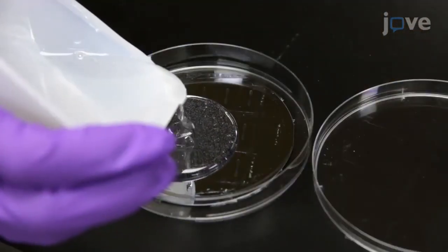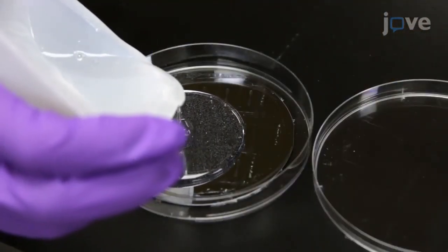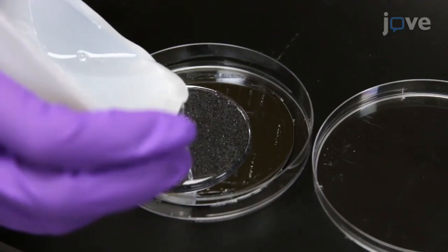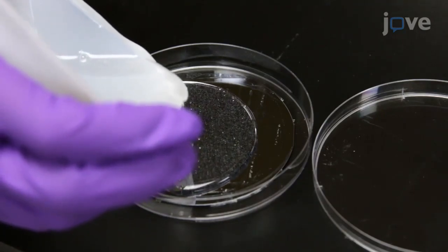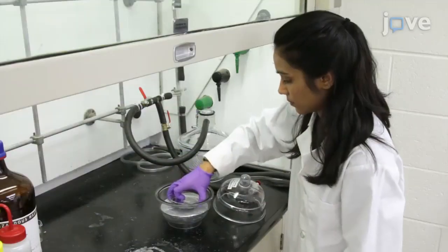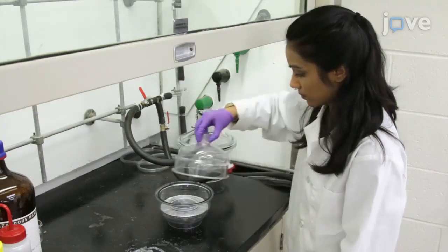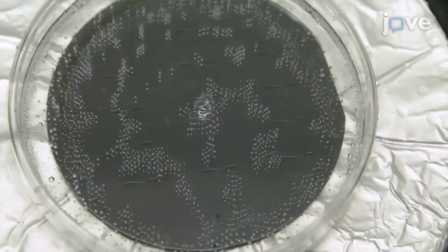Place the master silicon wafer in a plastic Petri dish and pour the PDMS solution over the wafer to create a 5mm layer. Cover the dish and leave it in a desiccator under vacuum for one hour to remove air bubbles.